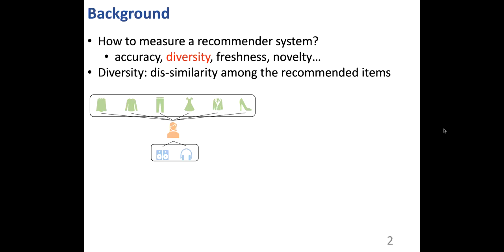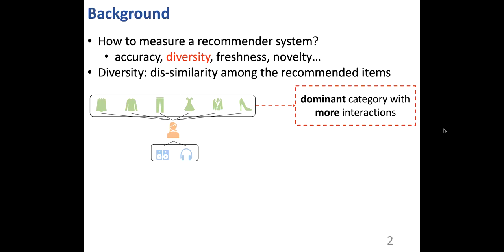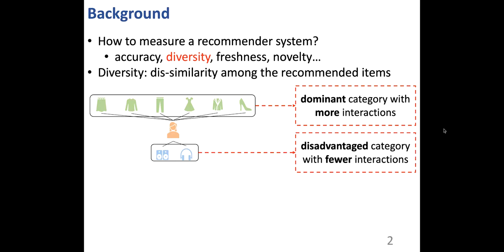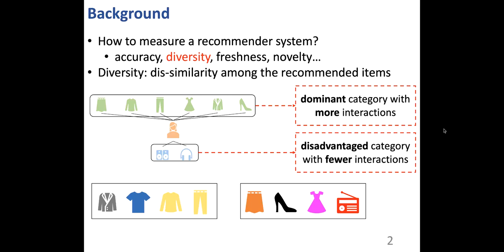Here is an example of a user's interaction history. There is a dominant category with more interactions, and in this example, clothes is the dominant category. Electronics is the disadvantaged category with fewer interactions. Here are two recommendation lists for the user. The first one only recommends clothes and it is accurate but redundant. While the second one recommends both clothes and electronics, so it is accurate and diverse.